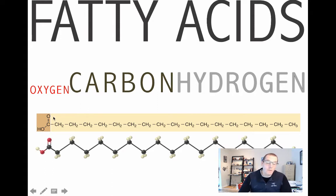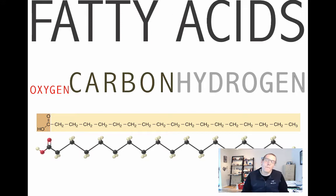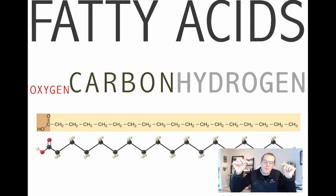The acid part of the name comes from this carboxylic acid group on the left in orange. At a neutral pH, for example, this carboxylic acid group will lose its hydrogen. The hydrogen ion leaves as a proton, leaving a negative charge behind in the form of an electron. Because this molecule will dissociate to release a proton, that increases the proton concentration in solution, so the pH goes down. That's what makes this an acid.